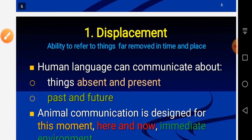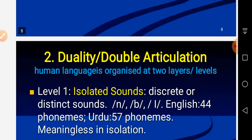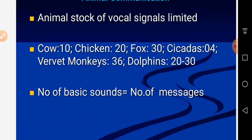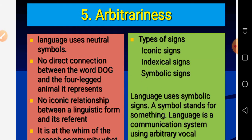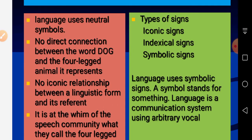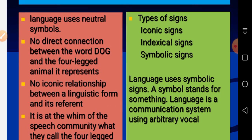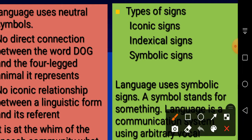Today's topic is arbitrariness. Before I discuss arbitrariness, let me introduce the idea of signs. There are three types of signs: iconic signs, indexical signs, and symbolic signs.